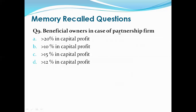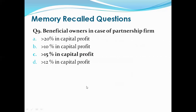Question 9: Who is considered a beneficial owner in case of a partnership firm? If somebody is a partner in a partnership firm, how much share must they have to be considered a beneficial owner? Options are: more than 20 percent in capital/profit, 10 percent, more than 15 percent, more than 12 percent. The right answer is more than 15 percent in capital/profit. Any person in a partnership firm with more than 15 percent in capital or profit will be considered a beneficial owner.